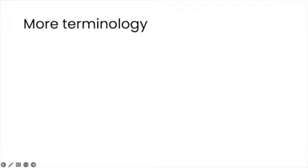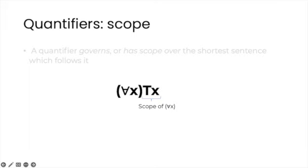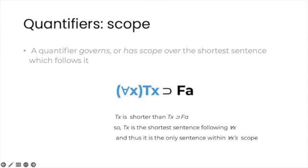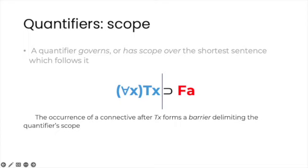Okay, let's get a little more terminology out of the way. We'll start with the important notion of the scope of a quantifier, and then we'll introduce the idea of variable binding. We say that a quantifier governs, or has scope, over the shortest sentence which follows it. So in this sentence, the scope of the universal quantifier is tx, which is the only sentence, and therefore the shortest sentence, that follows it. But if we add more symbols, in this case a horseshoe and an atomic sentence, then the sentence fa falls outside of the quantifier scope. It is as if the occurrence of a connective after tx forms a barrier, or a fence, delimiting the quantifier scope.